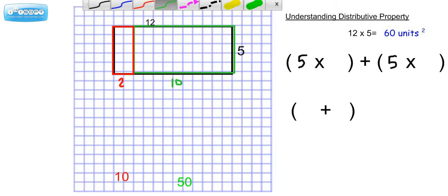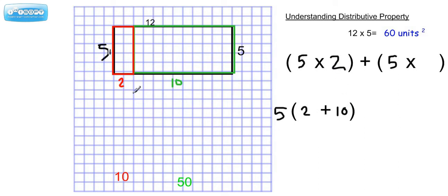So, one way to distribute this, 5 was the dimension that didn't change and we broke up the length of this into two things that add up to be 12, which in this case were 2 and 10. So, in other words, we did 5 times 2, and we get 10. And we did 10 times 5, or 5 times 10, and we get 50.